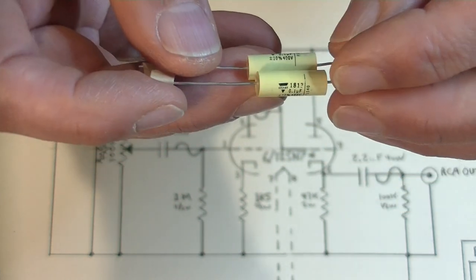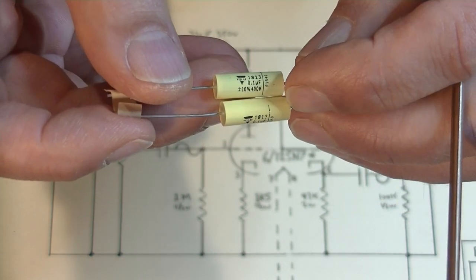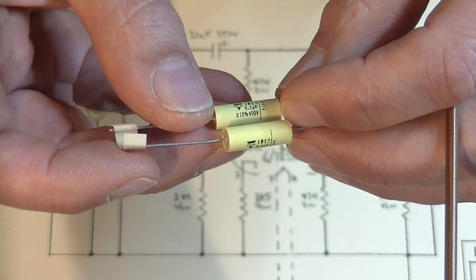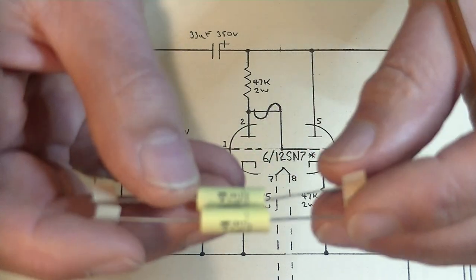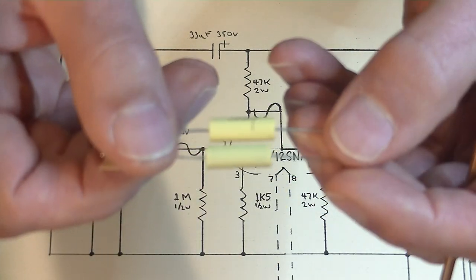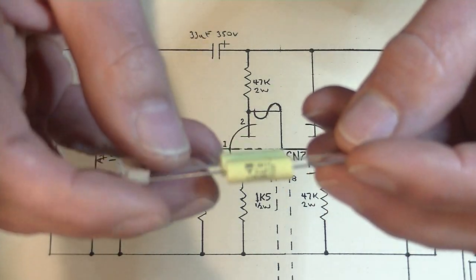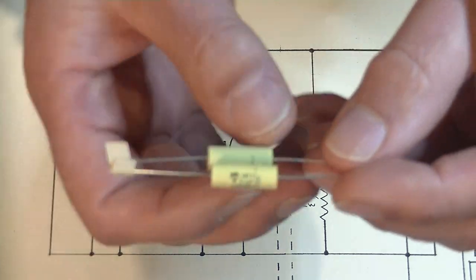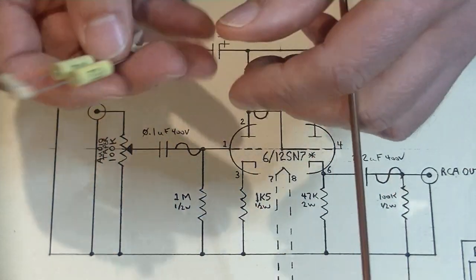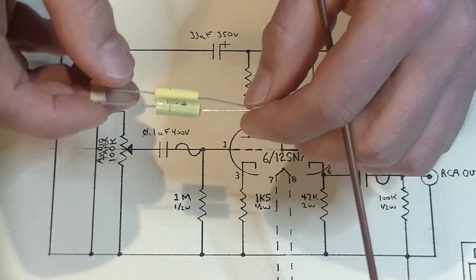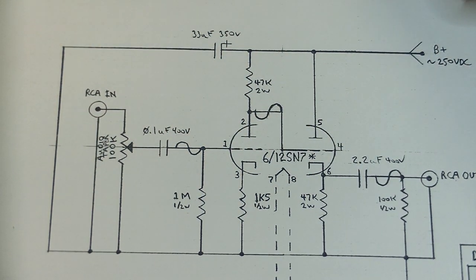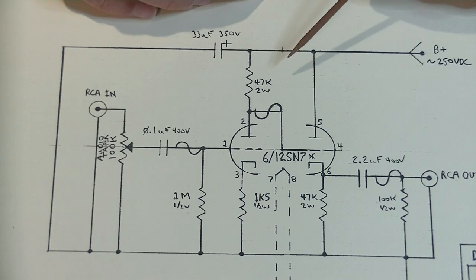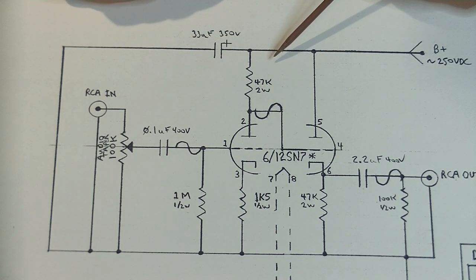Now, you can get fancier capacitors for these applications that are much larger and a lot more expensive. Now, you might notice that there's no band on these things. And the reason for that is there's no polarity. They can go in this way in the circuit, or they can go in this way. It doesn't matter at all. I just orient them so that the print's up so that I can see the value when I check my circuit.